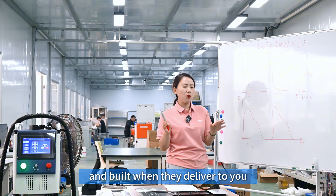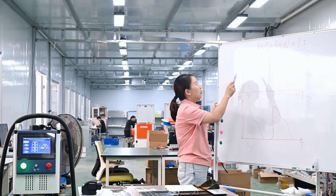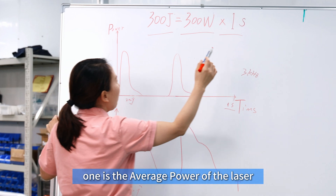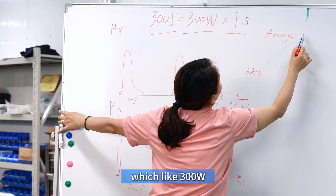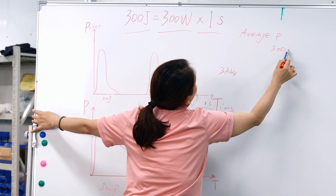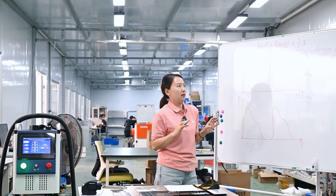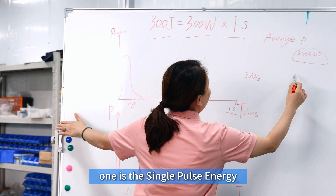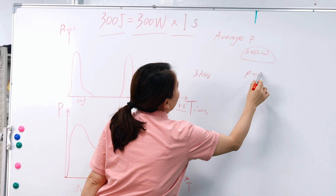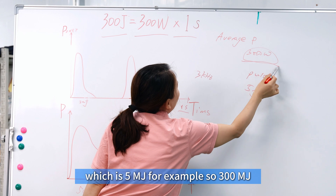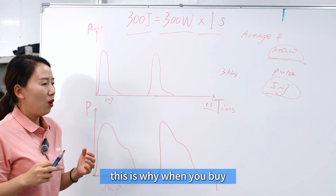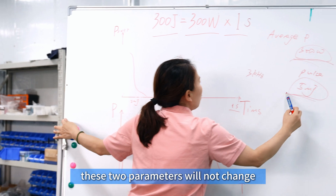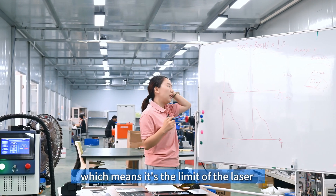You have to know that every laser, when designed and built, has two parameters already fixed that you cannot change. One is the average power of the laser — for example, 300 watts — so every second this laser will not generate more than 300 watts, no matter how you adjust the parameters. The other is the single pulse energy — for example, 5 millijoules. So '300 watt, 5 millijoule' is the specification. These two parameters will not change; they are the limits of the laser.